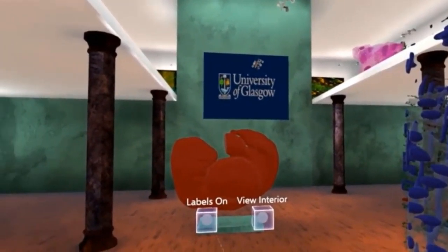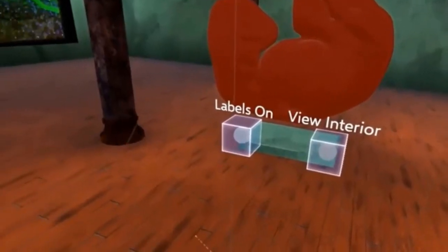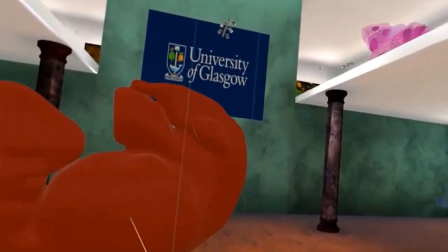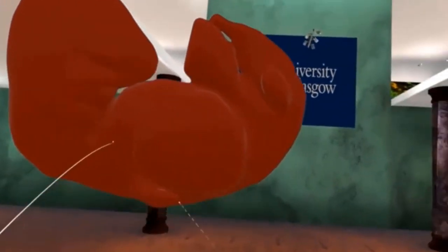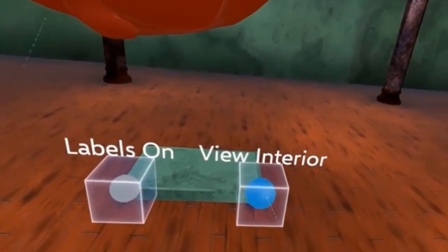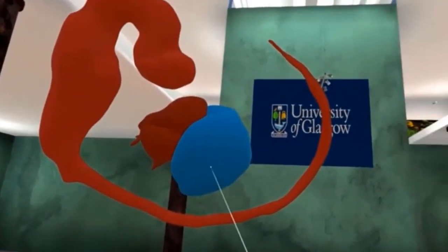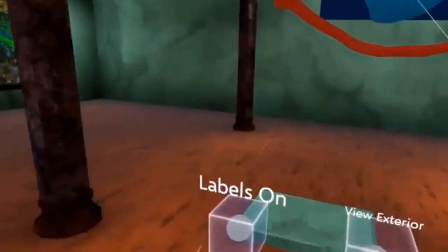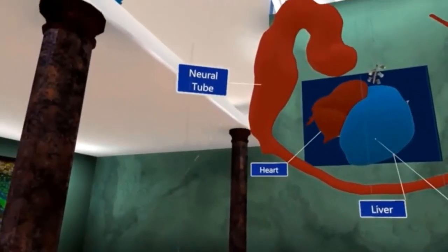The user can pick up the exhibits and examine them by switching off various views. Here we see the external surface of a sheep embryo, which can be switched off to reveal the inner structures, which also have labels on them.